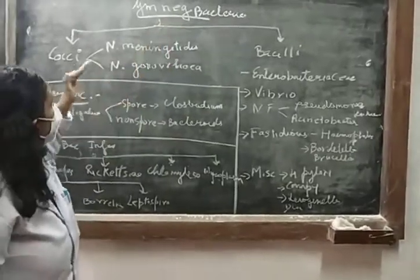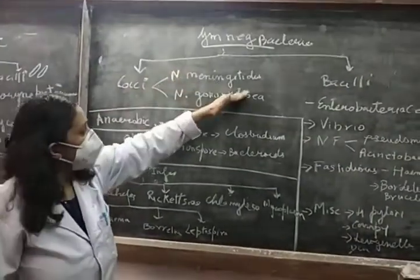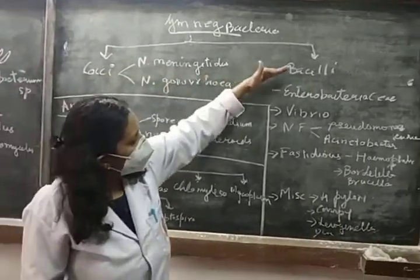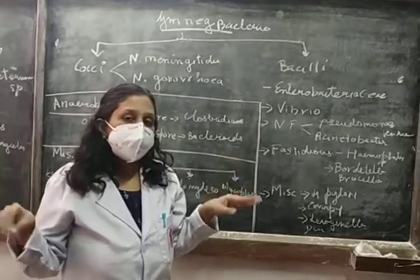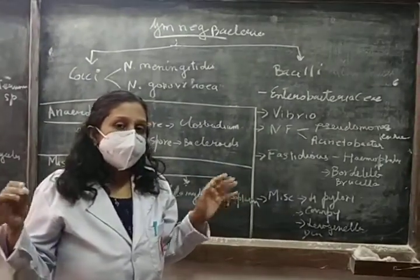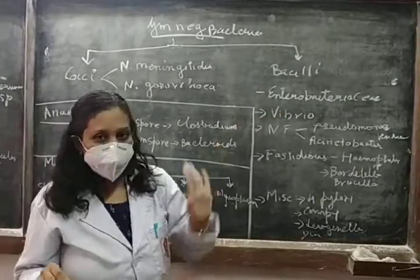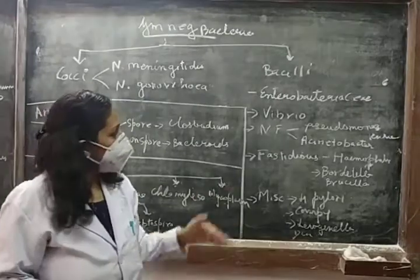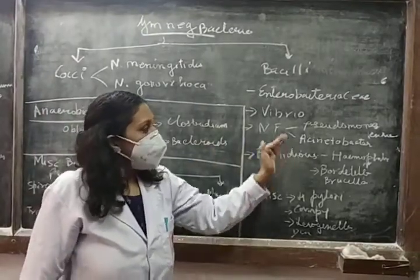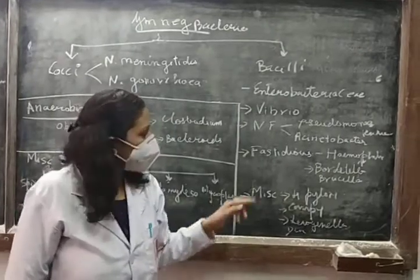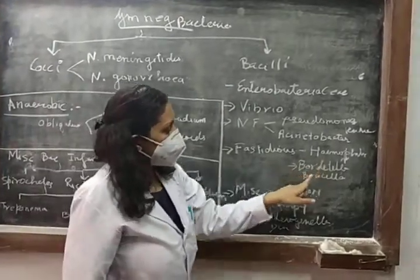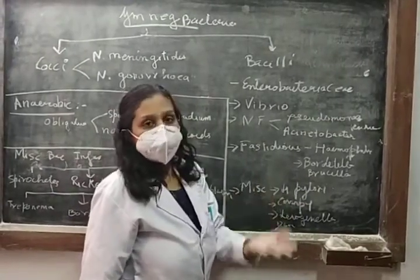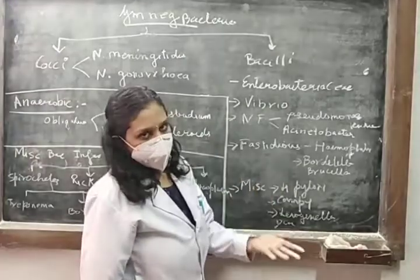Gram-negative cocci include Neisseria and others. The gram-negative bacilli are all the Enterobacteriaceae — like Escherichia coli, Klebsiella, Proteus, and others. Vibrio cholerae is also a gram-negative bacillus. Non-fermenters include Pseudomonas and Acinetobacter — all are gram-negative. Also Pasteurella, Haemophilus, Brucella, Bordetella, miscellaneous organisms like H. pylori, Burkholderia, Legionella, and many more.